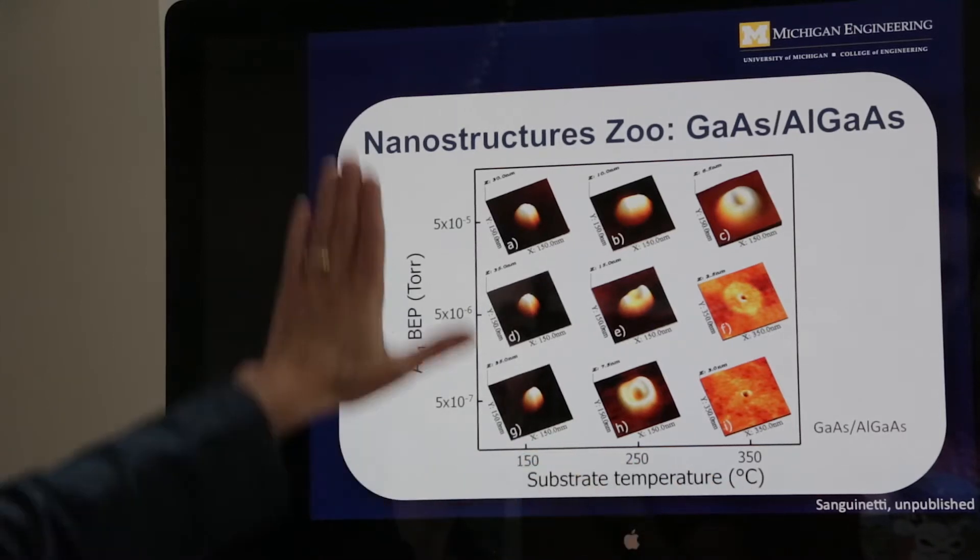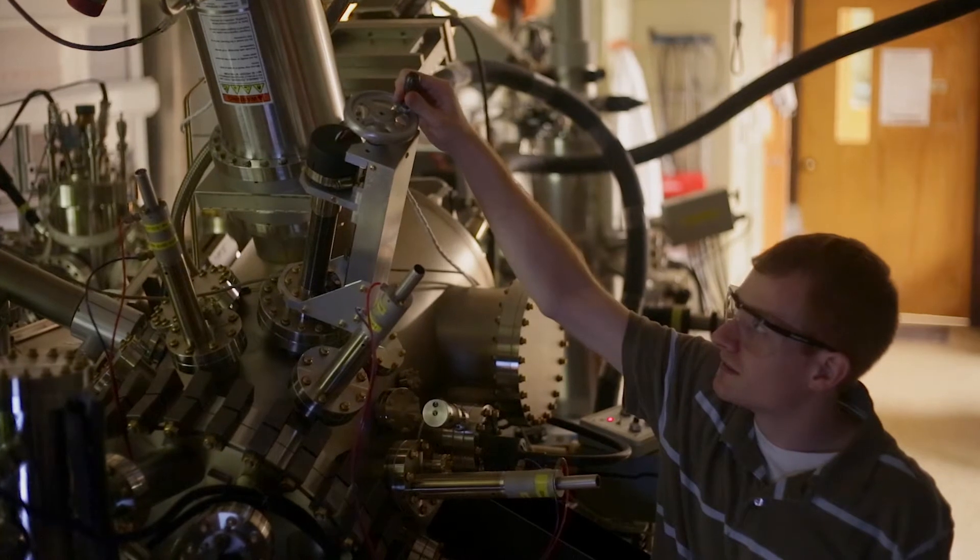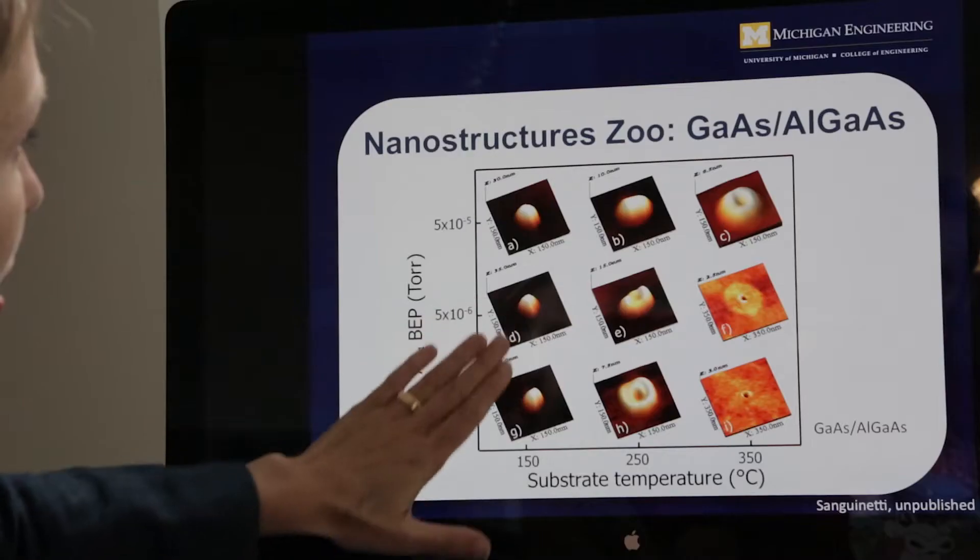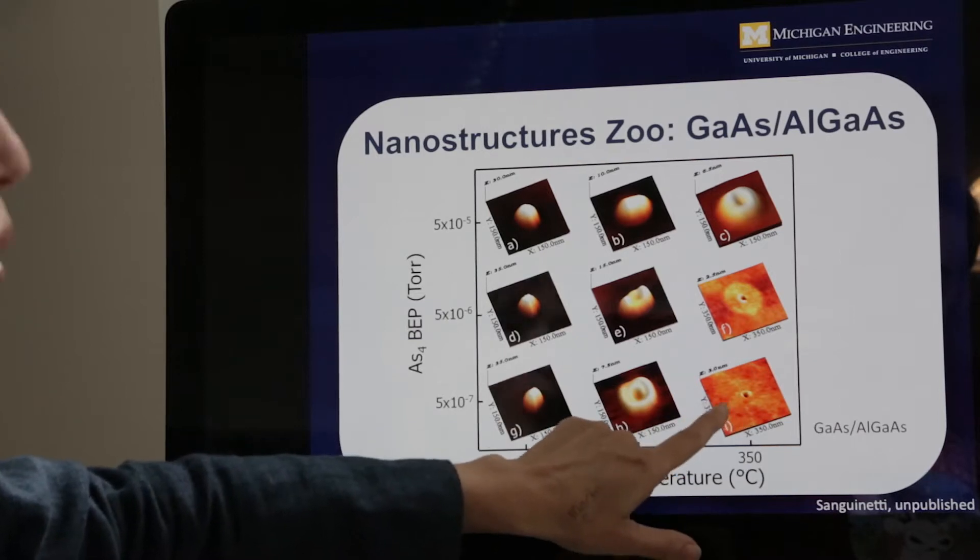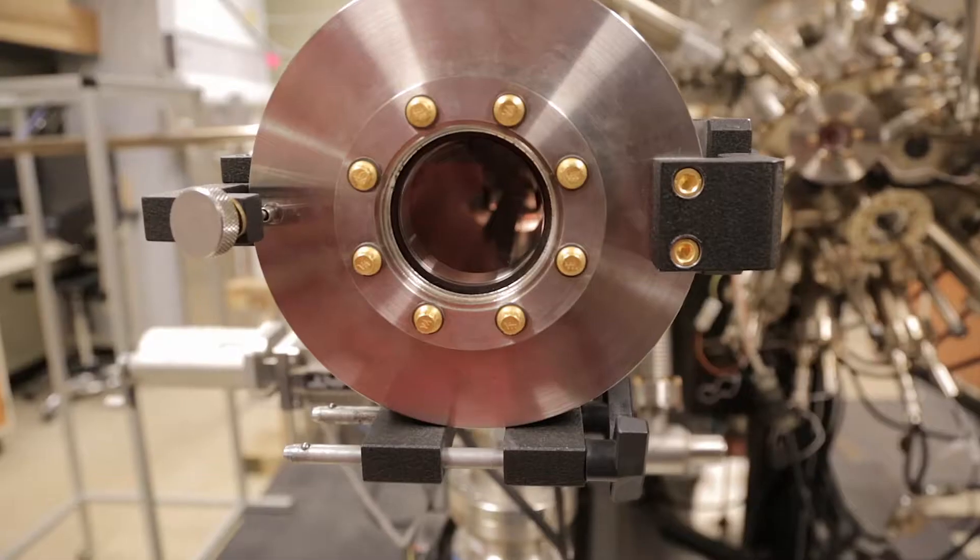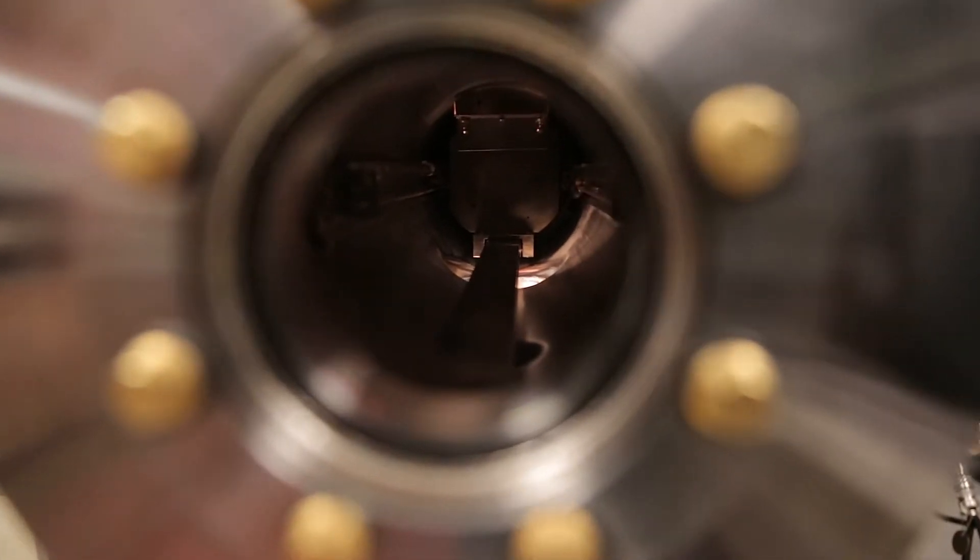This is the substrate temperature as a function of arsenic overpressure. And what you see are these different kinds of structures. You've got compact islands over here. You've got different kinds of rings that can develop, and you can also develop these holes. And we can predict all of these. This experimental data in our simulations match perfectly.